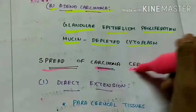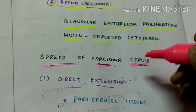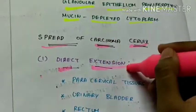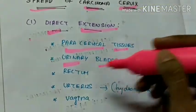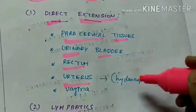Next is the spread of carcinoma cervix. It can be three modes of spread. One is direct extension through paracervical tissues, urinary bladder, rectum, uterus and vagina.